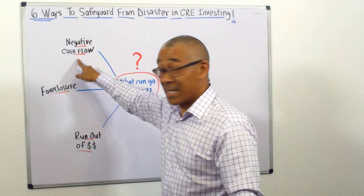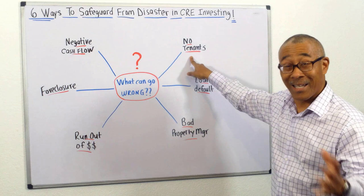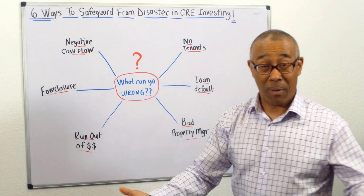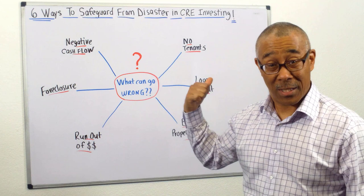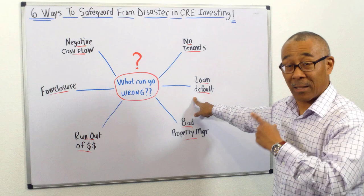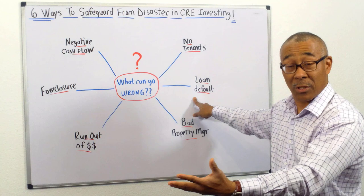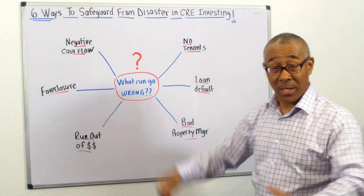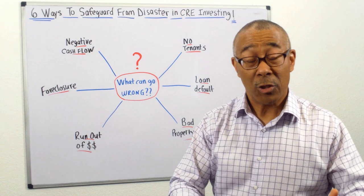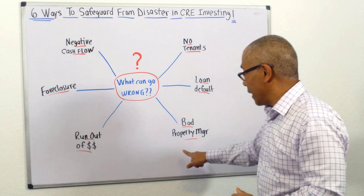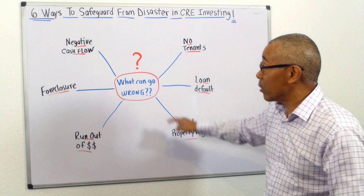Number two is no tenants — this is a disaster. You do not want to experience no tenants. What if you buy a property with no demand? Next is loan default — a horrible position to be in. When you default on your loan, the bank is in position to call the loan or take the property back. That can happen by your loan expiring and you not being ready to refinance. And next is having a bad property manager. A bad property manager can quickly bring you into disaster.